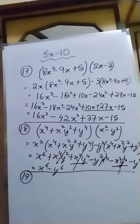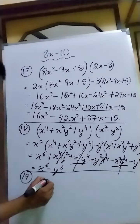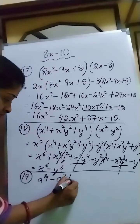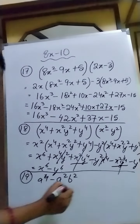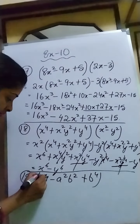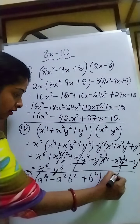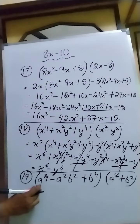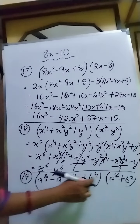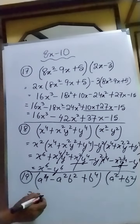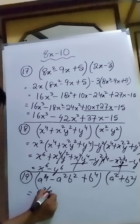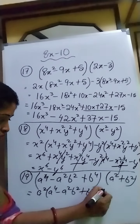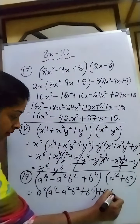Now we will solve the last sum for today's class, that is sum number 19. In sum number 19 it is given that a to the power 4 minus a squared b squared plus b to the power 4. This you have to multiply with a squared plus b squared. First we will multiply the whole expression with a squared, and then we will multiply the whole expression with b squared.